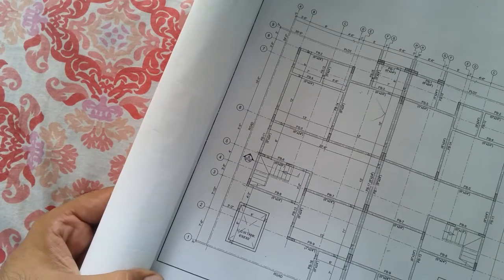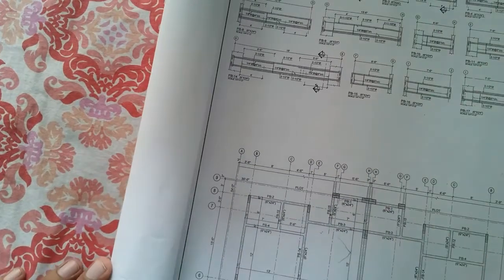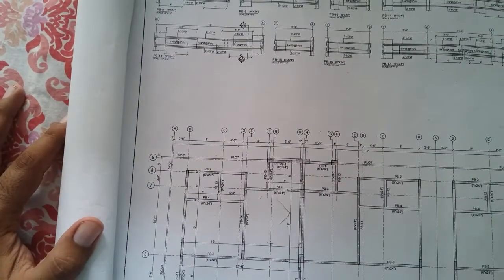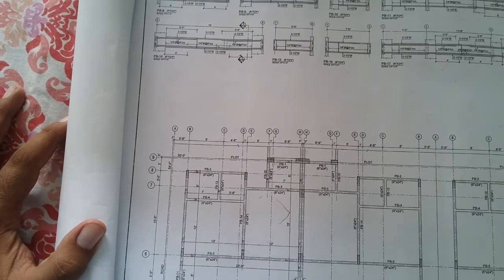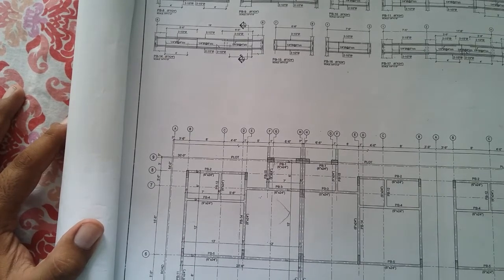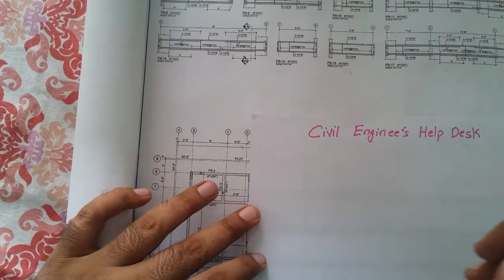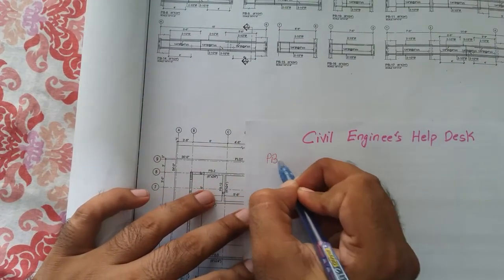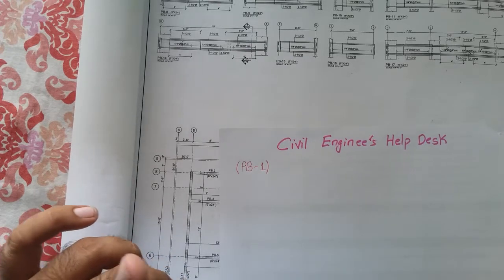These are the cross-sections for each plinth beam, and the cross-section for each plinth beam is given. In today's video, we will learn how to calculate the bar bending schedule for a plinth beam from the drawing. In this video I will work for only one plinth beam — we will take plinth beam 1, PB1. There are 17 plinth beams in the house; today we work for PB1.